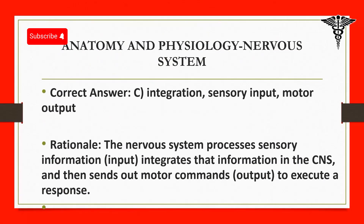Correct answer: C. Integration, sensory input, motor output. Rationale: The nervous system processes sensory information (input), integrates that information in the CNS, and then sends out motor commands (output) to execute a response.